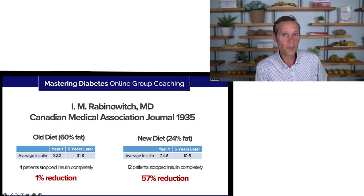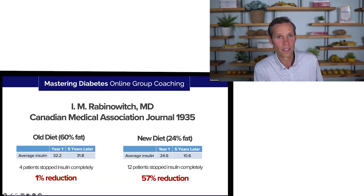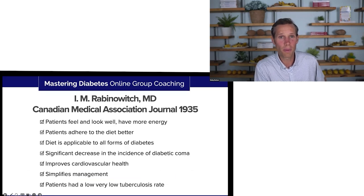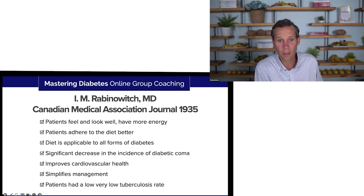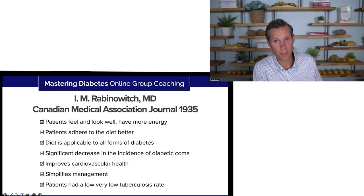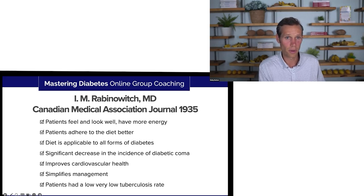On the old diet after five years, the average insulin use in the low-carb, higher-fat group dropped by only about 1%. Whereas on this new diet, there was a 57% reduction in insulin use — a dramatic change in insulin sensitivity. He concluded the paper demonstrating numerous benefits: patients feel and look well, have more energy, adhere to the diet better. This applied to all forms of diabetes. They had a significant decrease in diabetic coma, improved cardiovascular health, simplified diabetes management, and a low tuberculosis rate.